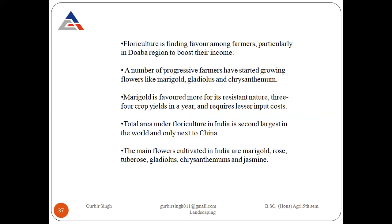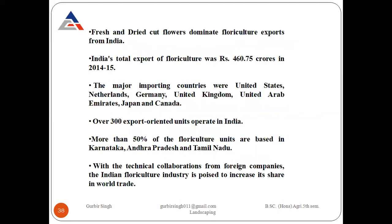Total area under floriculture in India is second largest in the world, only next to China. The main flowers cultivated in India are marigold, rose, tuberose, gladiolus, chrysanthemum, and jasmine. Fresh and dried cut flowers dominate floriculture exports from India. India's total export of floriculture was Rs. 460.75 crore in 2014-15. The major importing countries are the United States, Netherlands, Germany, United Kingdom, UAE, Japan, and Canada.